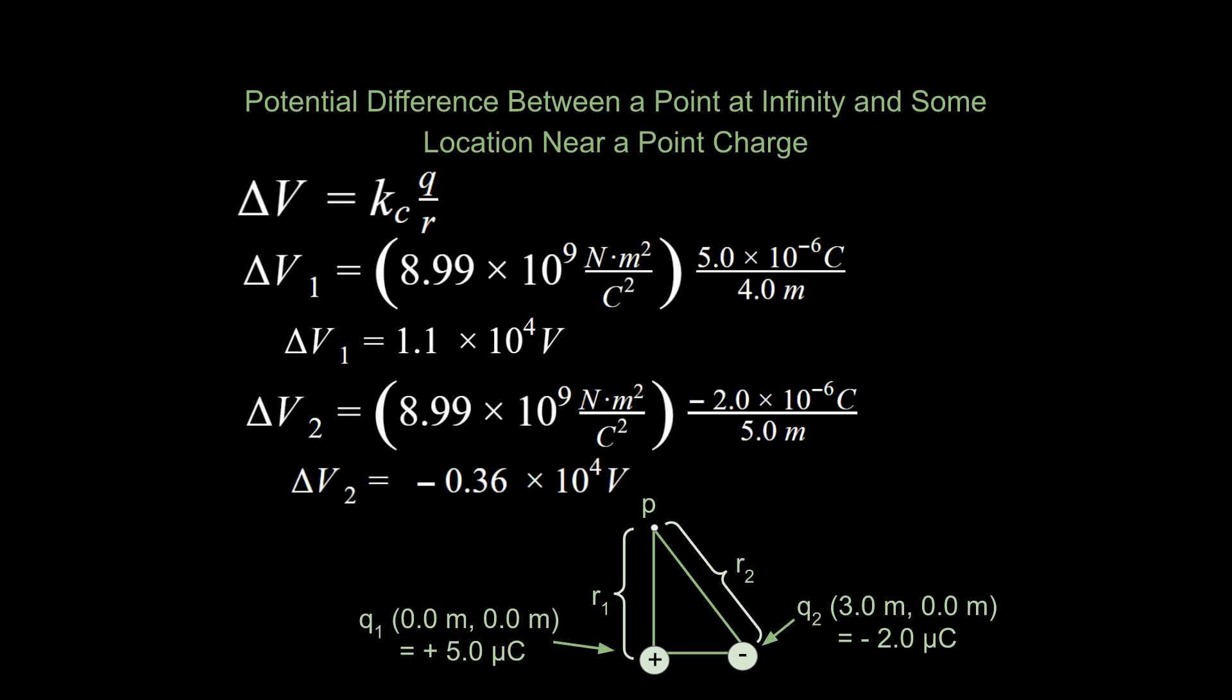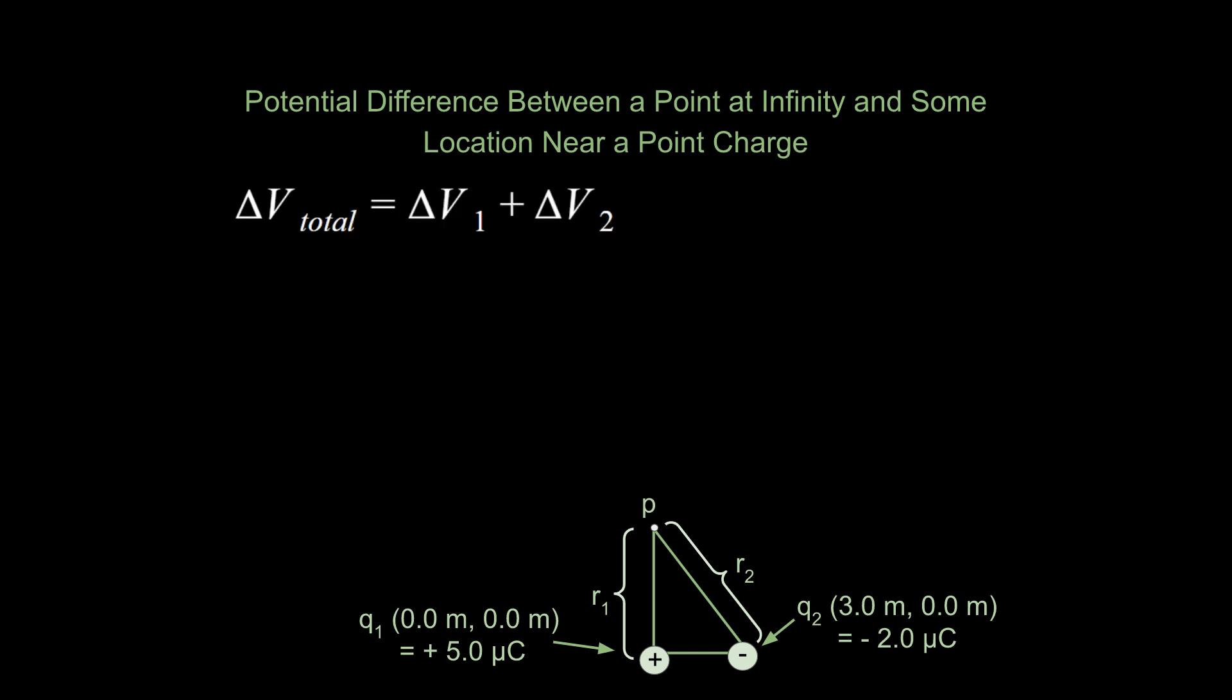You're going to do the same thing for Q2. And then my question is, what would you guess that we do with that information? You may not know because I haven't written out the problem, but you may have been able to anticipate, well, to find the overall potential difference at that location, would we just add up those potential differences from those two charges? And the answer is yes, that's what you would do. It's very similar to figuring out what the net electric field is at a point in space. We're doing that here for potential difference. So we go ahead and we start adding those values together and we end up with a value of 7000 volts. So that's going to be our answer to our example problem.